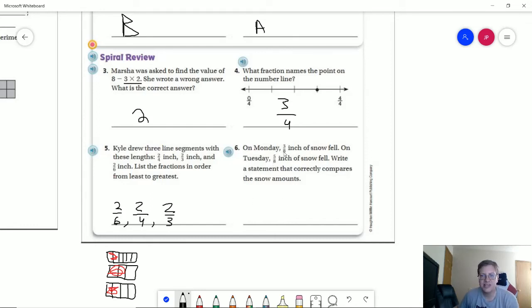Number six, three eighths of an inch of snow fell on Monday, five eighths fell on Tuesday. Okay, comparing the two, what we could do is we could say three eighths is less than five eighths. So if we were writing an inequality statement, we could do that. Or we could say that five eighths is greater than three eighths. So that would be an option for what you could do for that.